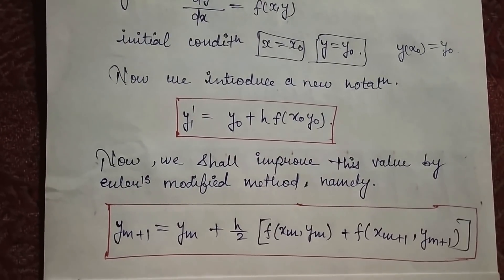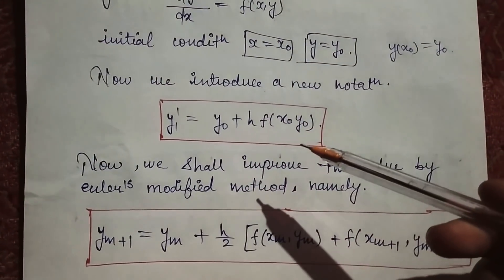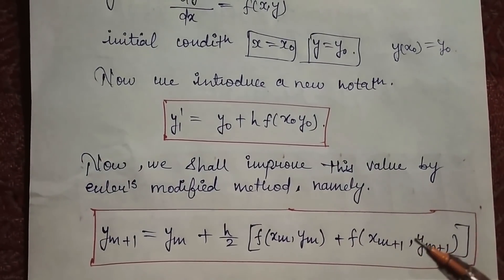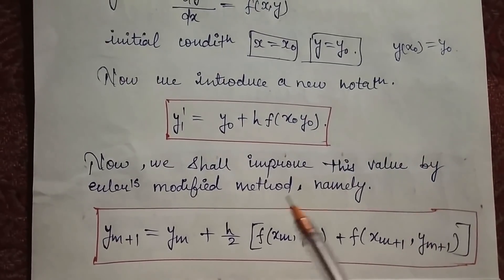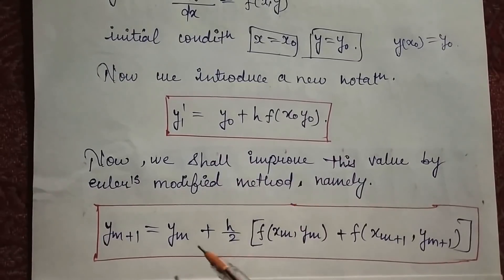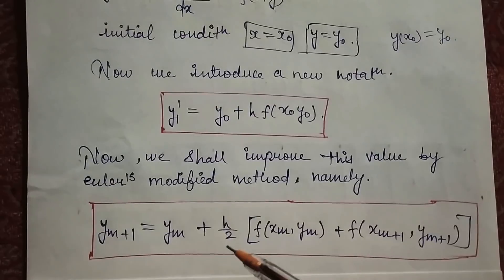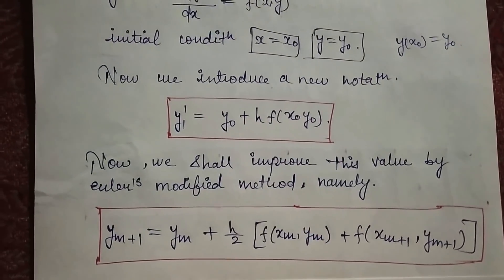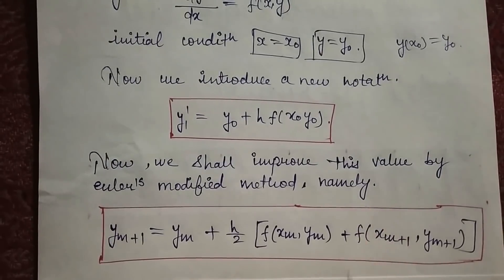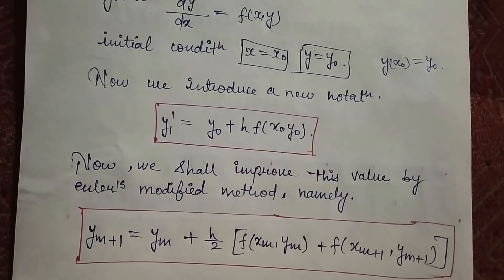Now we shall improve this value by the Modified Euler's method. Up to this point it was the same as Euler's method, but since this is the modified version, obviously there is one modification step. The modification is: instead of finding y(i+1), here we need to find y(m+1). These two red boxes — you have to read them and memorize this formula. So let's come to the question.